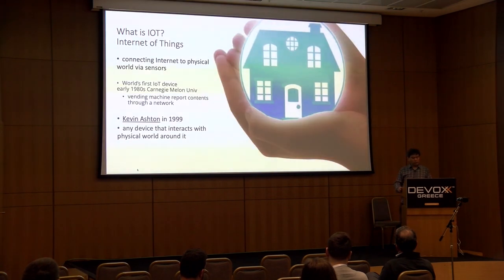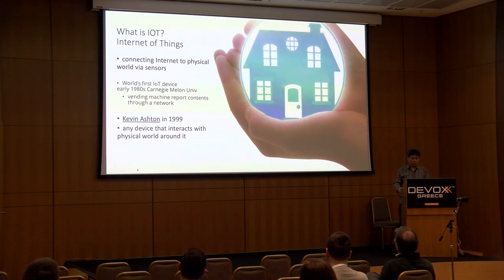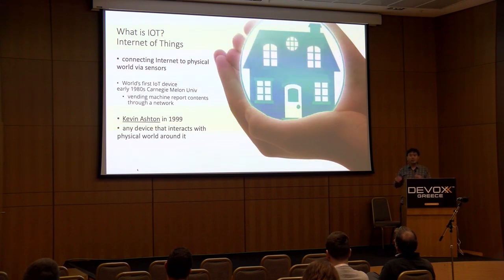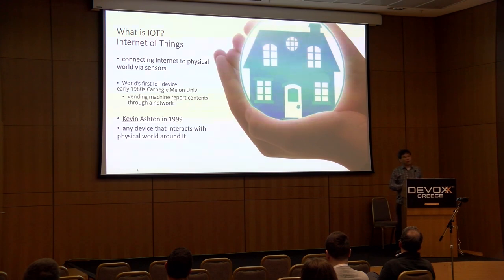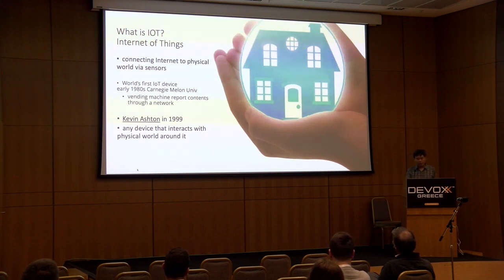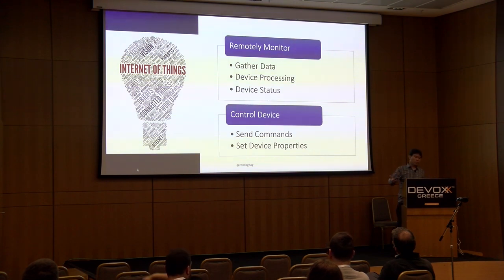Internet of Things is the connecting of the internet to the physical world via sensors. The first IoT device was actually built back in the 1980s at Carnegie Mellon University — it was a vending machine that reported its contents through the network. The term was coined by Kevin Ashton back in 1999, defined as any device that can interact with the physical world around it. Alexa, Google Home, and smart phones are all examples.